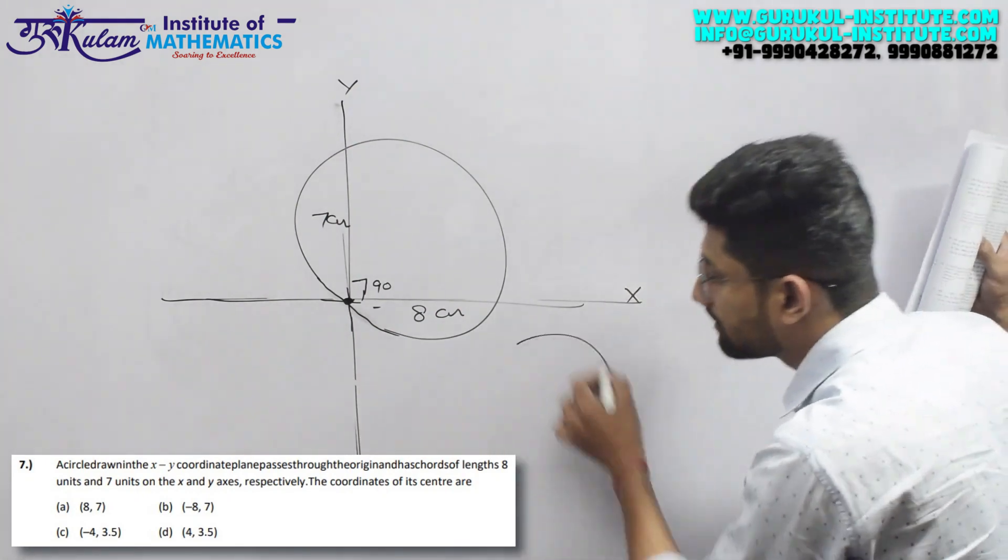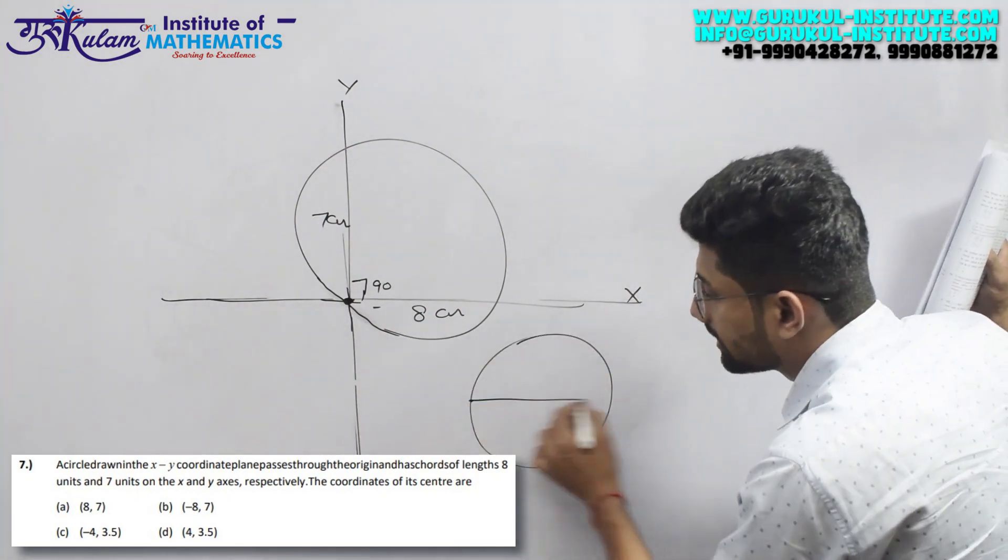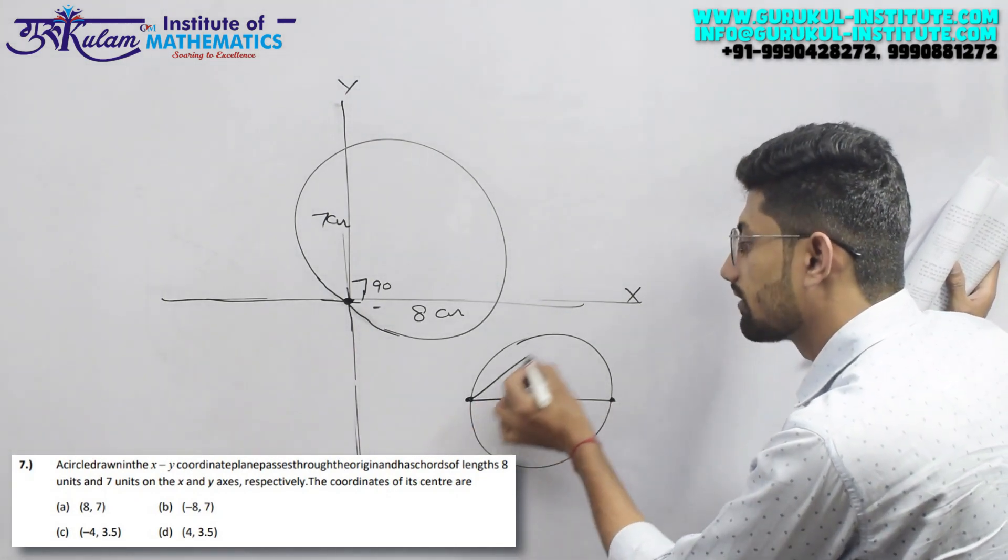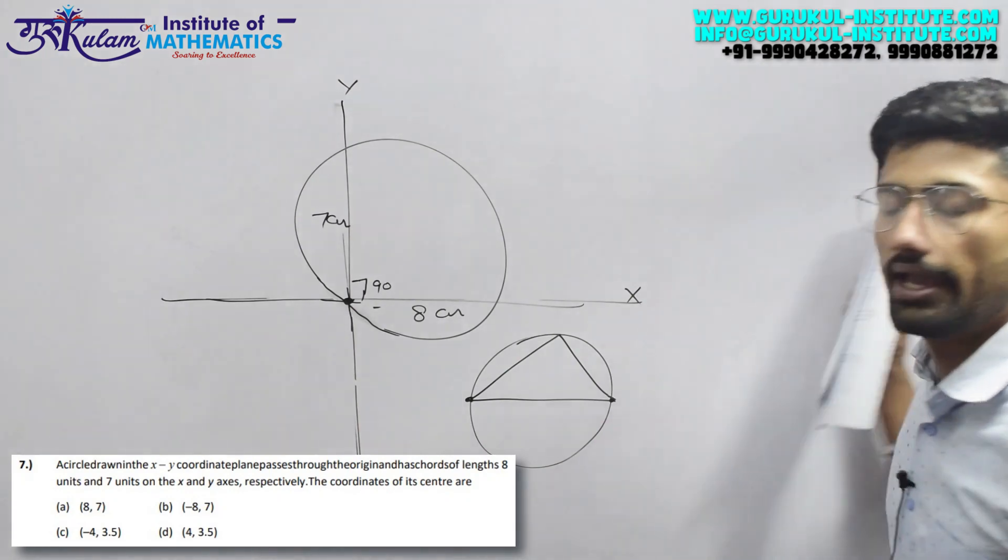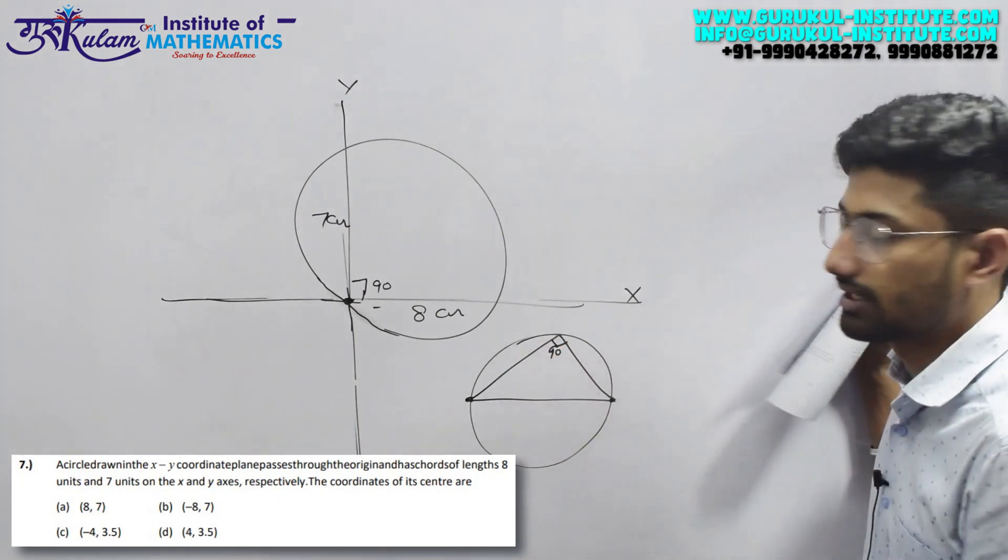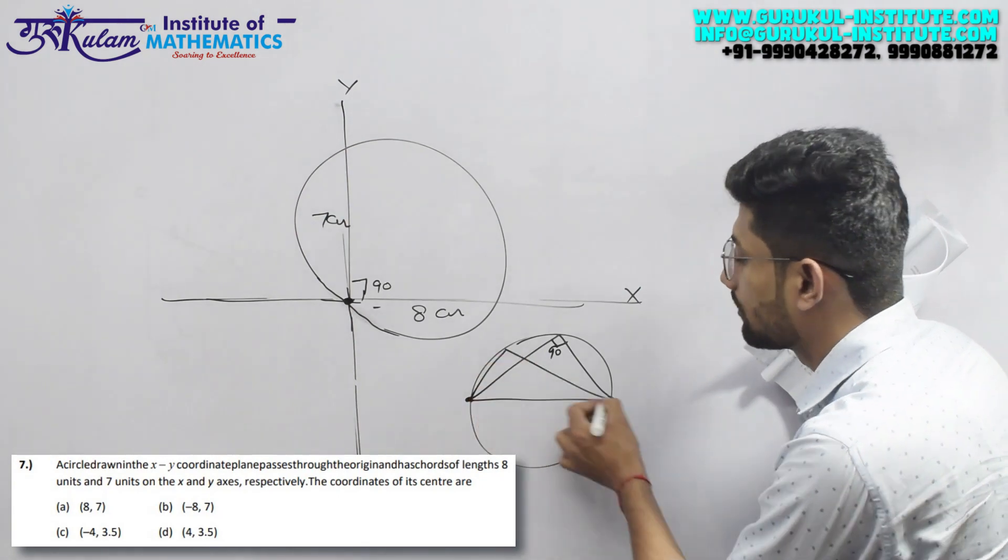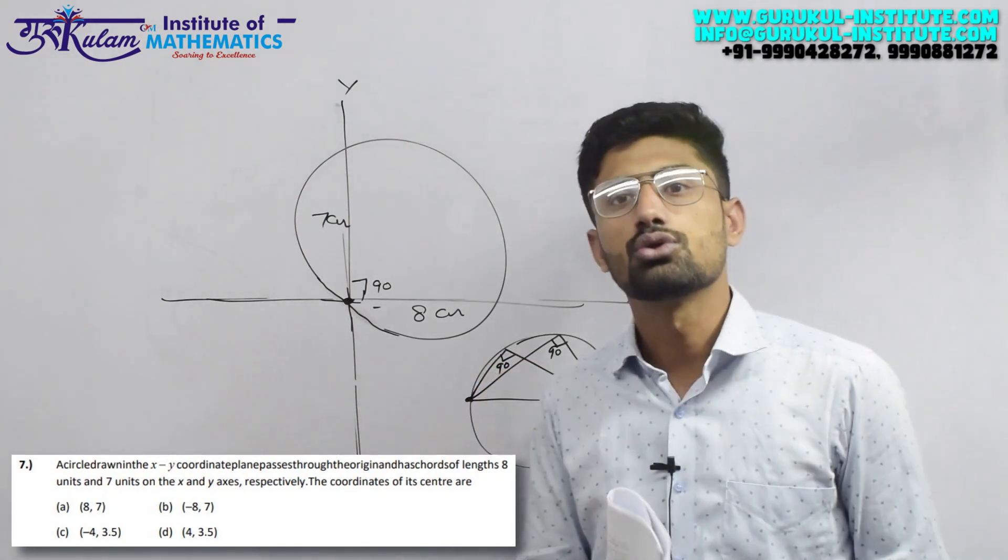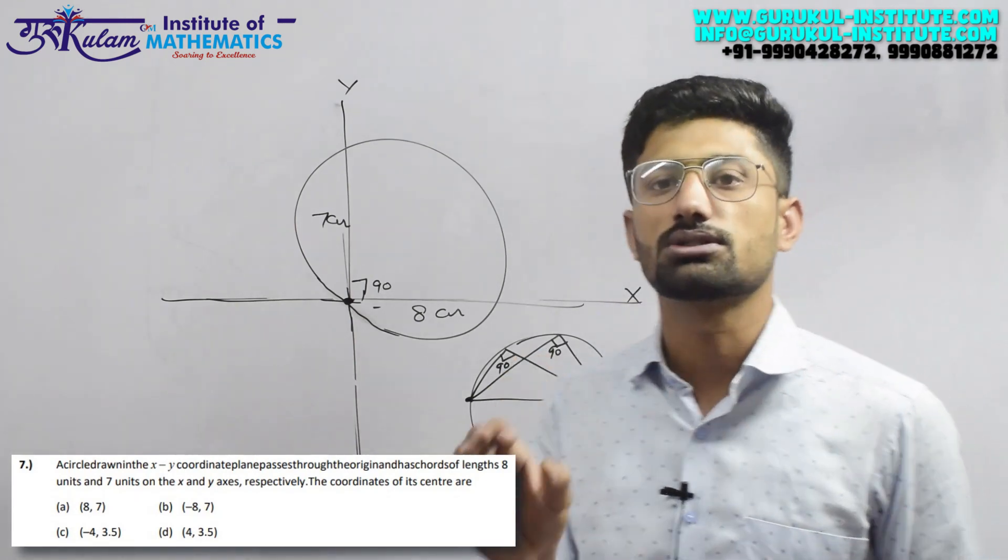I have told you the most important property of circles: when you form an angle at any point on the circumference from the diagonal, this angle is always 90 degrees. At any point you check, the angle will always be 90 degrees.